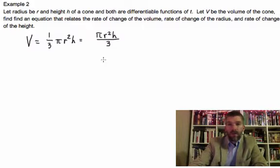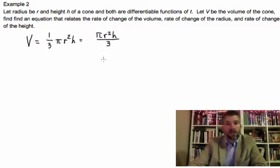We want V to be the volume. We want to find an equation that relates the rate of change of volume, rate of change of radius, and rate of change of height. So we're going to have a chain rule situation. Now we've got the equation that we're going to work with. We've developed our mathematical model.